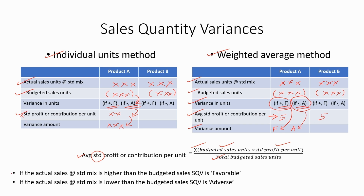For sales quantity variances, remember just two points: if actual sales at standard mix is higher than budgeted sales, the variance is favorable. If actual sales at standard mix is lower than budgeted sales, the variance is adverse. These points are straightforward to remember.